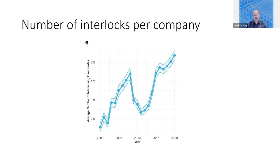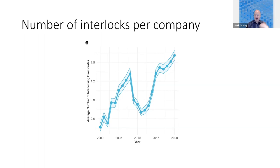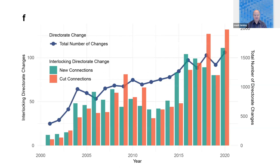The number of interlocking directors per company also goes up. The average number of interlocking directors is more than 1.5 at this point. So it's not just that we see some companies doing it — we see some companies doing it a lot. There are many people interlocked across multiple boards in this space.